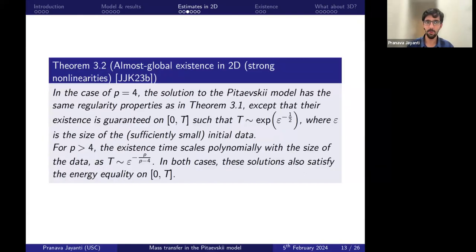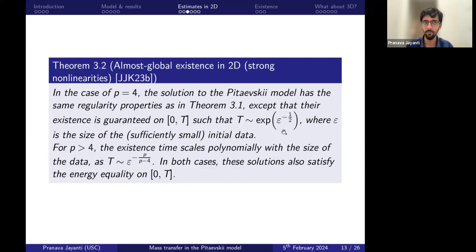For strong nonlinearities: if P equals four in 2D, we have the same properties as in the previous theorem, except we can only guarantee existence up to some finite time that scales exponentially with the inverse size of the data — so we call it almost global existence. For P bigger than four, the existence time scales polynomially with the size of the data. In both cases the solutions satisfy the energy equality.